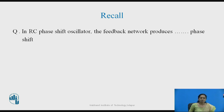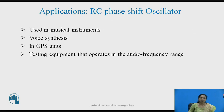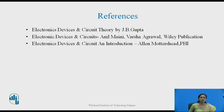Recall: in the RC phase shift oscillator, the feedback network provides a phase shift of 180 degrees. The applications of the RC phase shift oscillator include musical instruments, voice synthesis, and GPS units — all operating in the audio frequency range. It can also be used as testing equipment operating in the audio frequency range. These are the references used. Thank you.